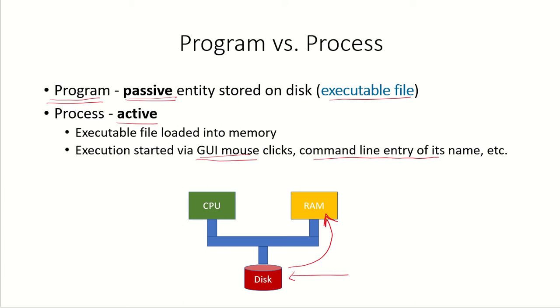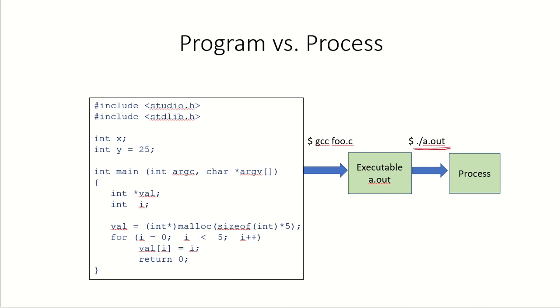Now it is in the active state and now it is referred to as a process. Suppose this is a high level language program stored in the secondary storage. This is also in a passive state and it is referred to as a program.